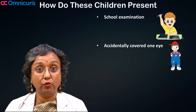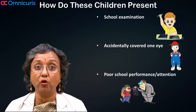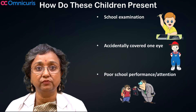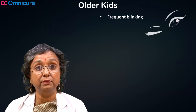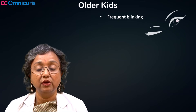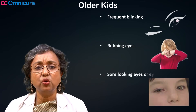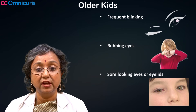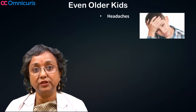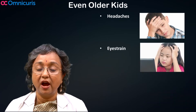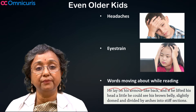They may also present with poor school performance or attention. In older kids there may be frequent blinking, rubbing of eyes, sore looking eyes or eyelids. Even older kids may present with headaches, eye strain, or words moving about while reading.